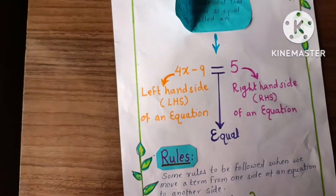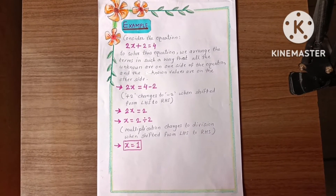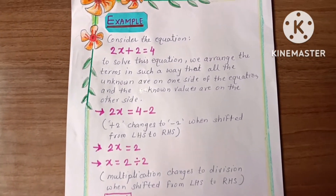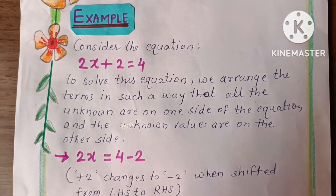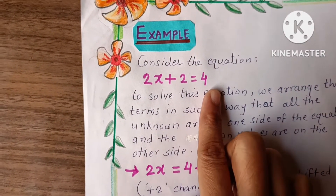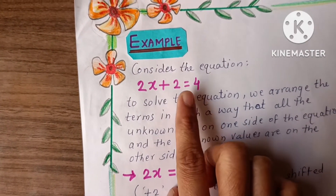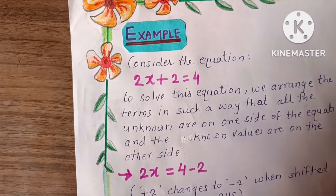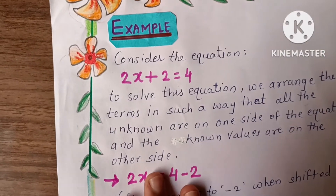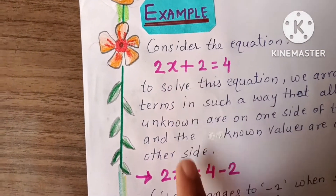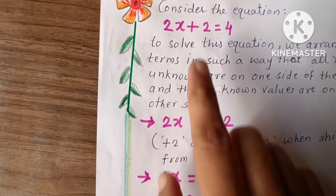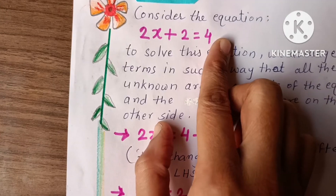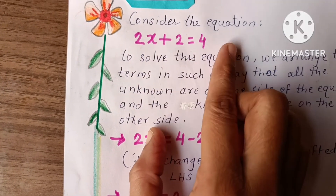The next page is an example of the equation. While solving this equation, first we have to put known values on one side of the equation and unknown values on the other side. Here, plus 2 is present — when we move it to the opposite side of the equation, the plus will convert into minus.